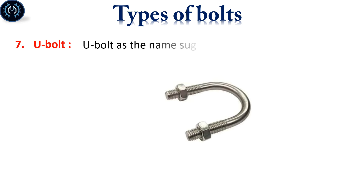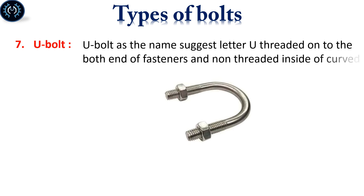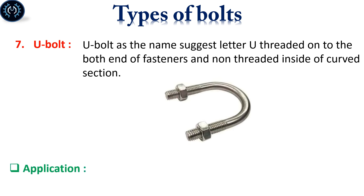U-bolt, as the name suggests, is shaped like the letter U, threaded on both ends of the fastener with a non-threaded inside curved section. U-bolt is used for supporting pipework.